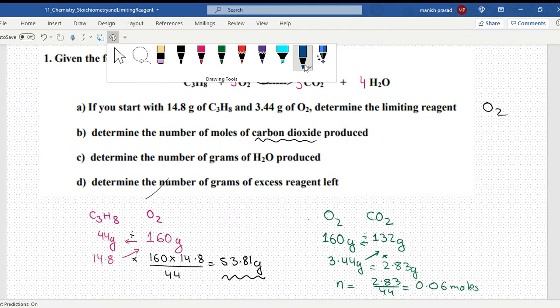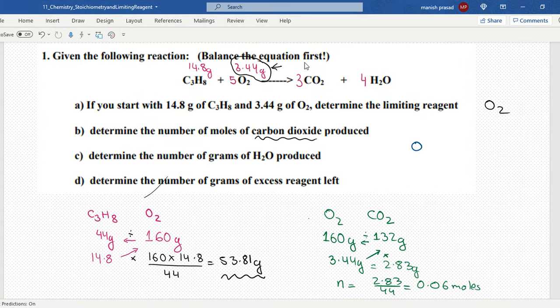Now determine the number of grams of water. Again when you have to find it, we go to the limiting reagent. O₂ is 160 grams and water H₂O is 18 into 4, which is 72. Oxygen used is 3.44 grams, so now again the same thing - multiply and then divide. 3.44 times 72 divided by 160 and you'll get the mass of water produced.